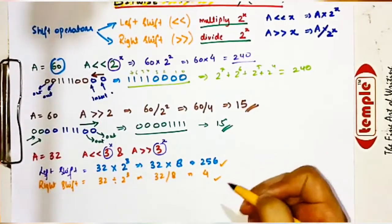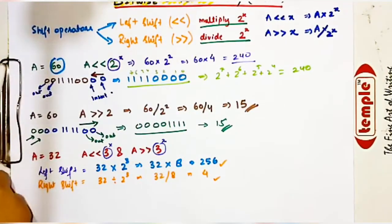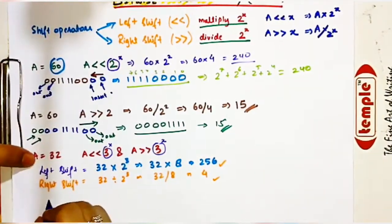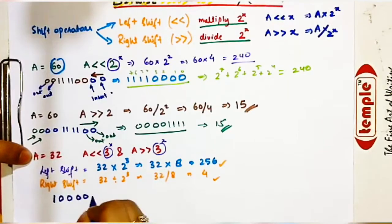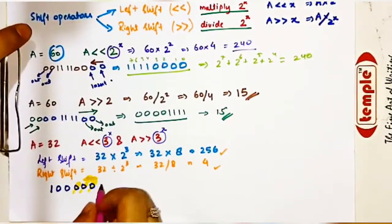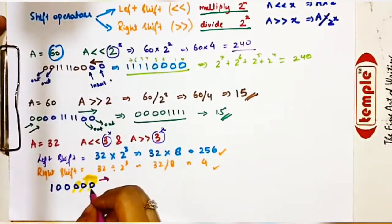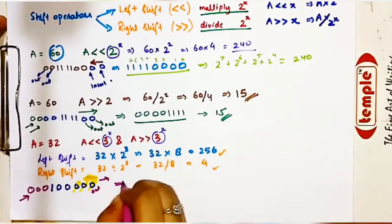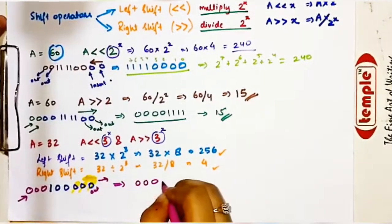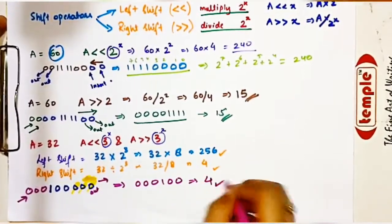Let's verify this in binary. The binary number for 32 is 00100000. For right shift by 3, the last three binary bits will pop out from the right and we insert three more zeros on the left side. The output binary number will be 00000100, which is clearly the binary number for 4. So right shift gives 4.